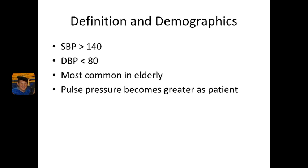Isolated systolic hypertension is most common in elderly patients because the underlying mechanism of disease is stiffening of the central elastic arteries, such as the aorta and the carotid. We'll talk a little bit more about that in a few moments.